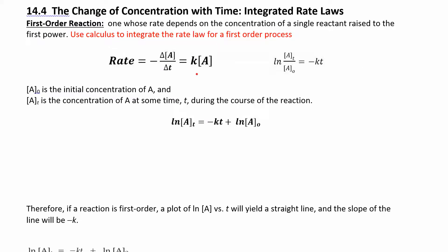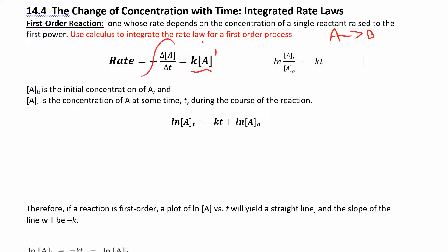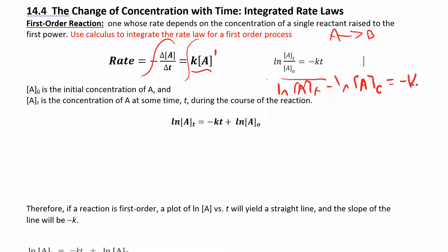First-order overall means the rate law is: rate equals K times [A]. Remember, rate is the change in concentration of A over change in time, with a negative sign because A is a reactant. To go from that form to the integrated form, you integrate both sides — that's the calculus step. Using log rules, you end up with: ln[A]_t minus ln[A]₀ equals negative K times T.